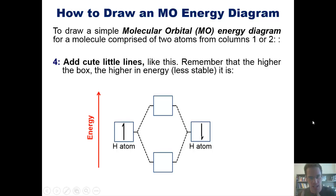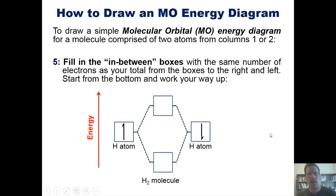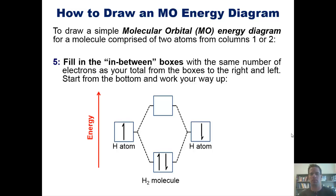Step five: fill in the molecular orbital boxes with the same total number of electrons as you had from the combined atomic orbitals, filling from the bottom up. In this case, I've got a single electron from each hydrogen atom — add them together, that gives me two. So I fill up these orbitals from the bottom up: one, two. That is now a complete molecular orbital energy diagram for H2.